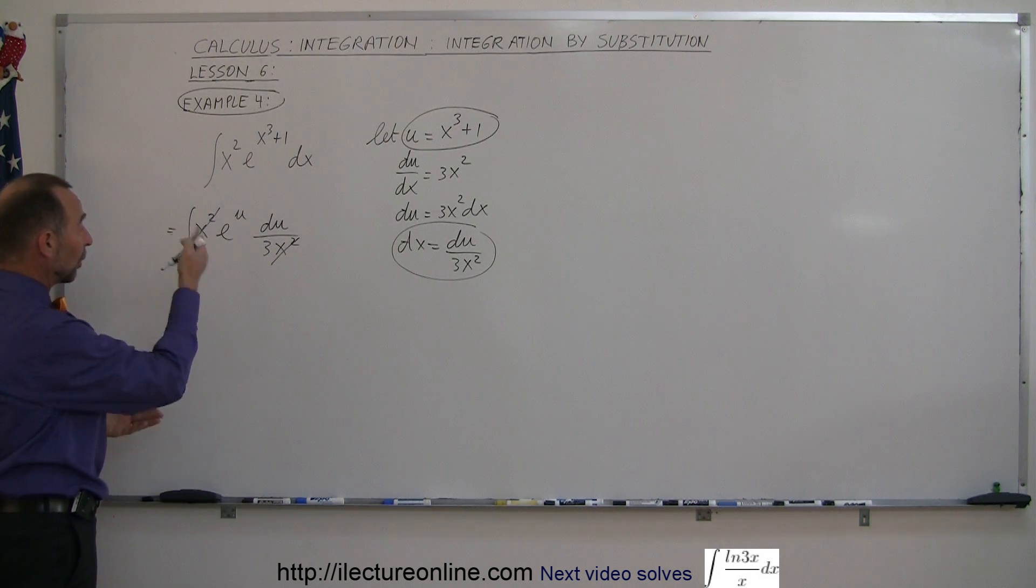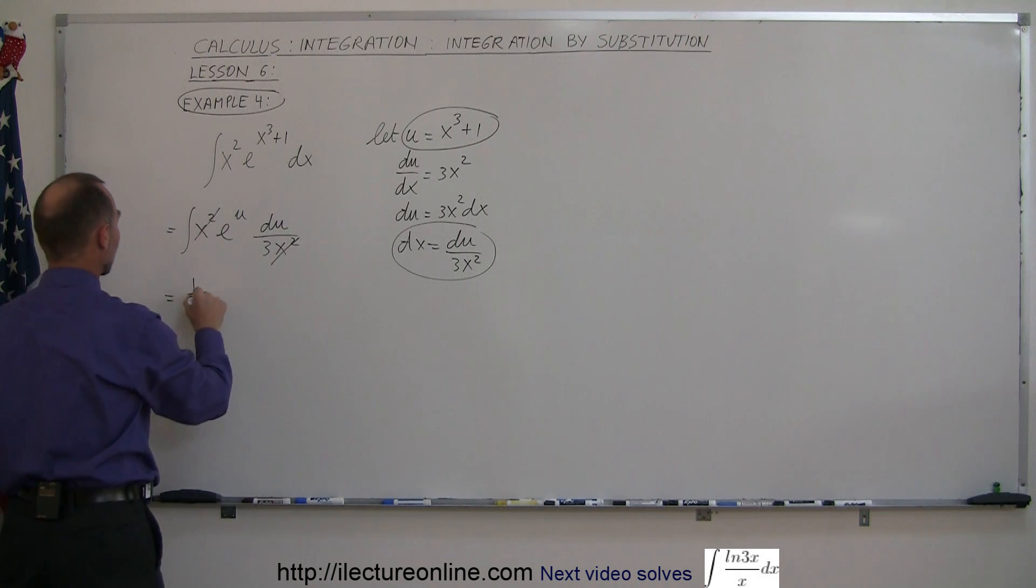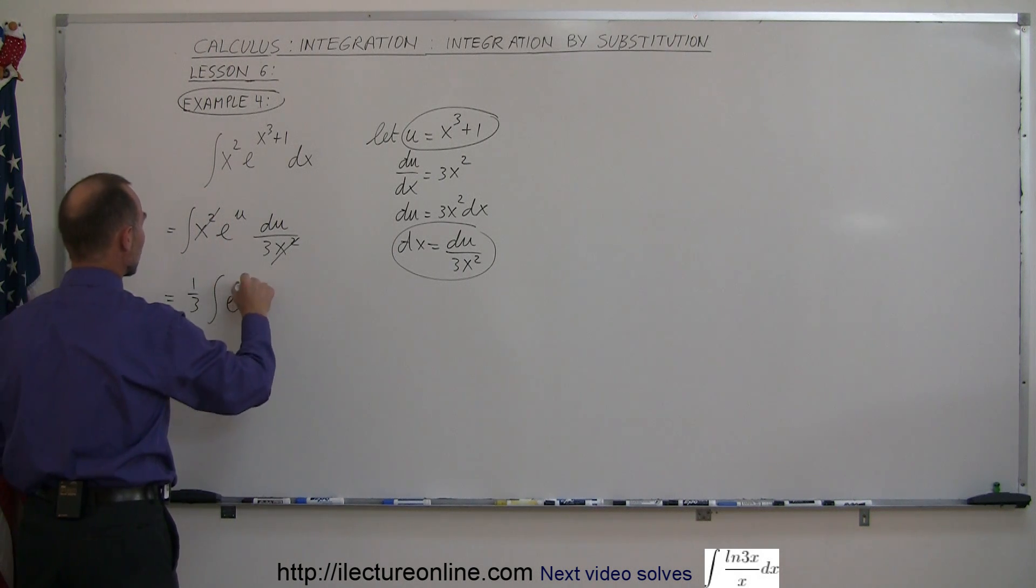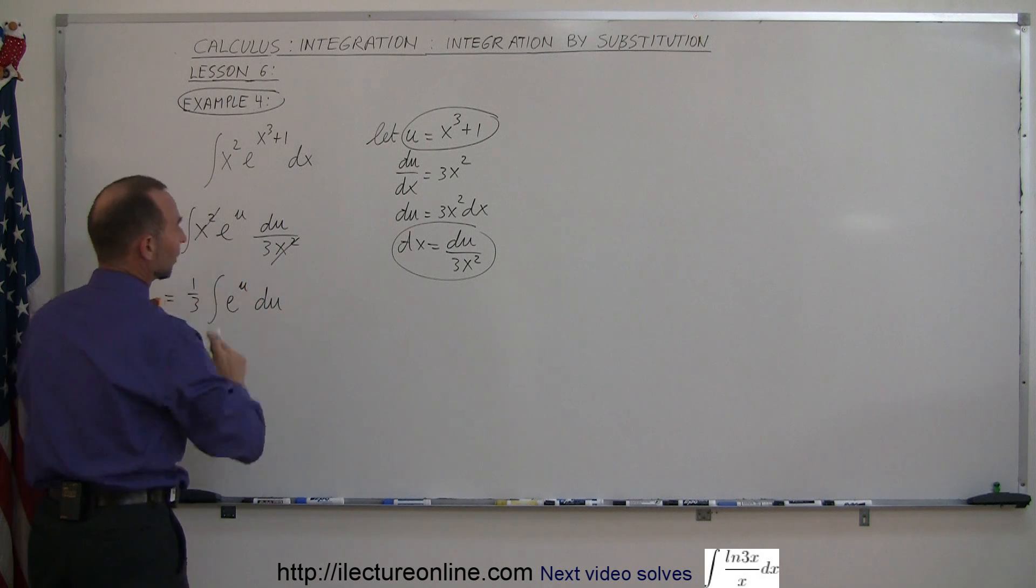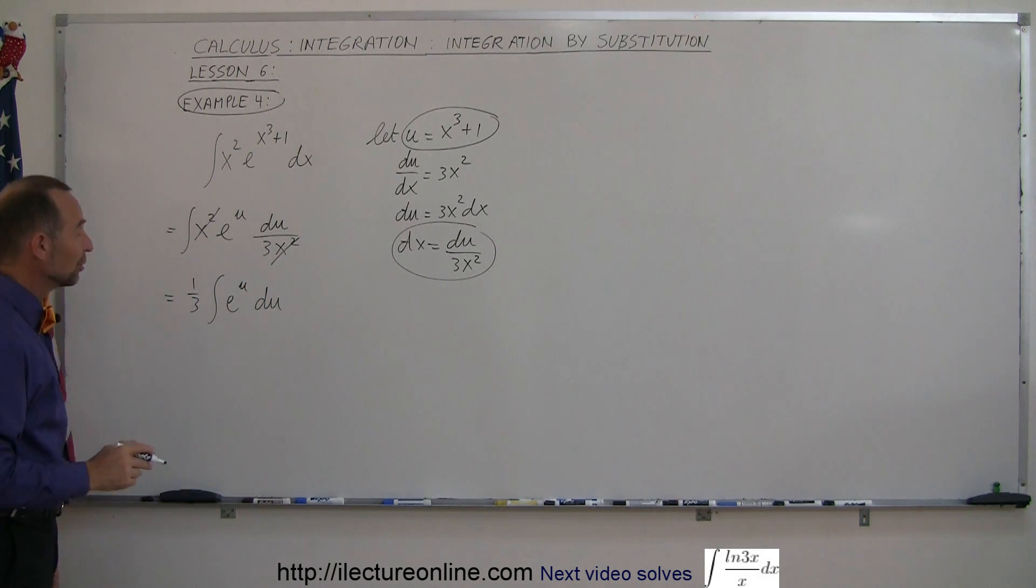You can take the 1 over 3 outside the integral sign, so this becomes 1 over 3, times the integral of e to the u du. That's a very classic form, e to the u du, the integral of that is simply e to the u.